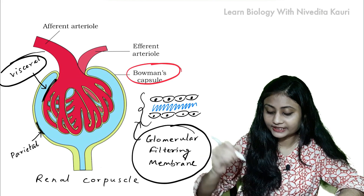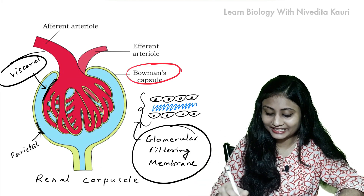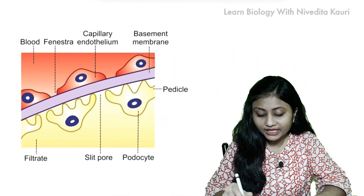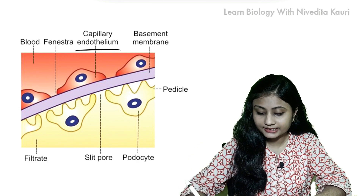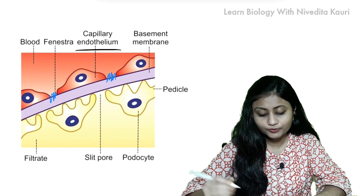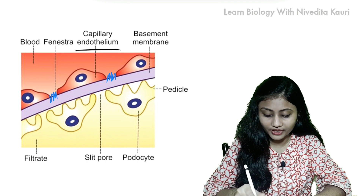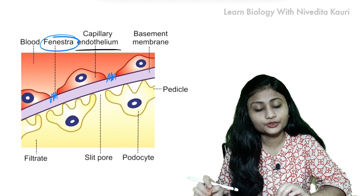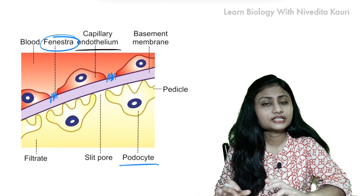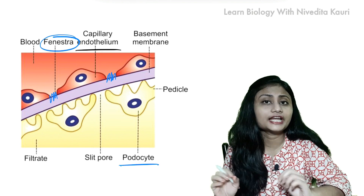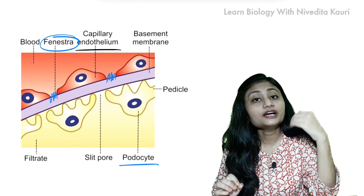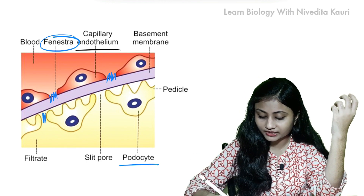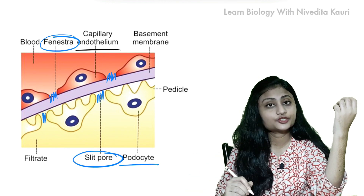The glomerular filtering membrane doesn't look like a simple membrane. Let us see how it looks. The capillary endothelium contains a number of pores, known as the fenestrae. The cells of the visceral layer of Bowman's capsule are known as podocytes, because they have a lot of foot-like processes. Due to the arrangement of the foot processes of the podocytes, there are some spaces called slit pores.